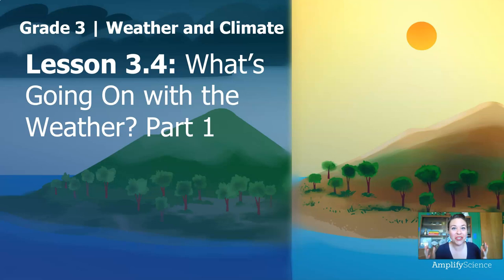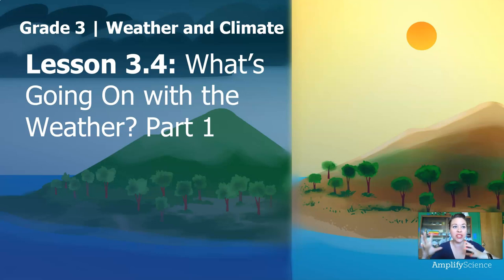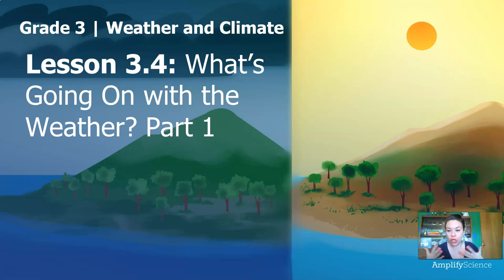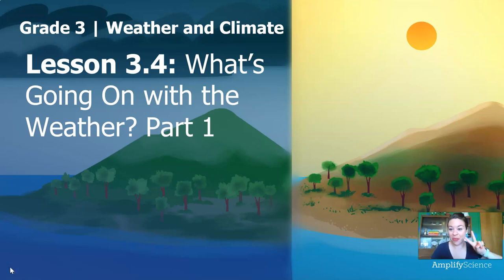In part one of this lesson, we learned that weather and climate are different in different places. On the east coast in Boston, Toby experienced cold snowy winters and hot rainy summers. The weather was totally different in San Francisco. I experienced the same thing moving from Baltimore to Seattle — Baltimore has cold snowy winters and hot humid summers with thunderstorms, while Seattle has beautiful weather that doesn't change as much throughout the year. Thanks for joining me today, and I'll see you next time for part two. Stay safe, stay curious. Bye!